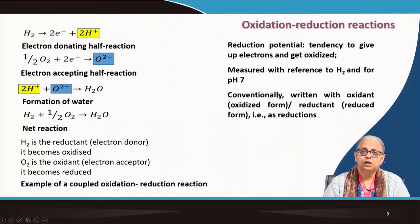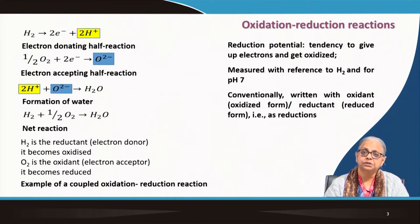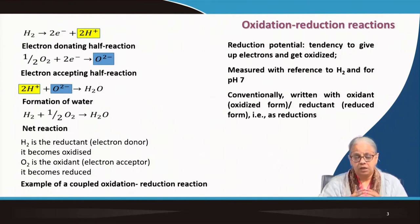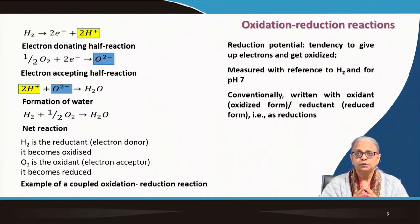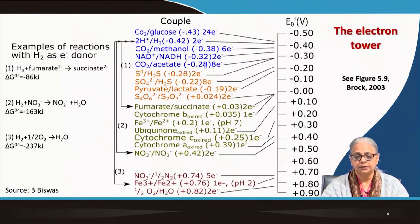This also tells us something about how to measure the reduction potential. The tendency to give up electrons and get oxidized is what we are measuring when we measure the reduction potential. It is always measured with reference to hydrogen and at pH 7. Conventionally, we write the oxidant or oxidized form on the left and the reductant or reduced form on the right.